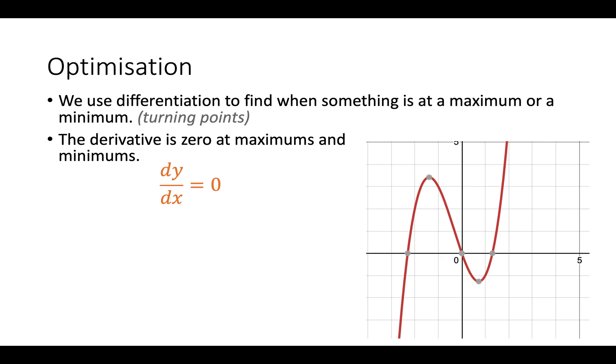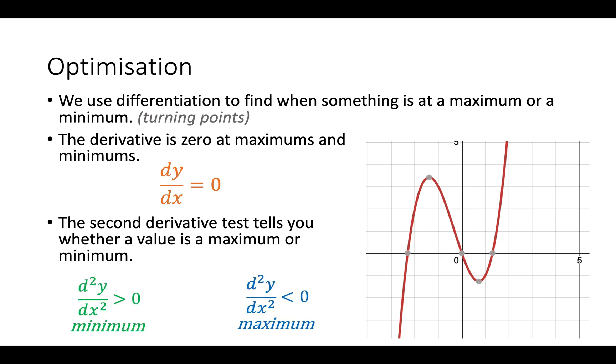Always to maximise or minimise something you make the gradient zero. Then we use a second derivative test to find whether something is a maximum or a minimum. Once we have a point we do a second derivative test to see whether it's a maximum or a minimum. If the second derivative is more than zero at that point it's a minimum. If it's less than zero at that point it's a maximum.